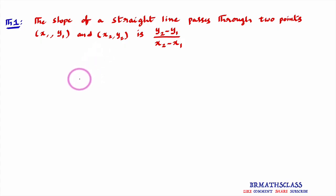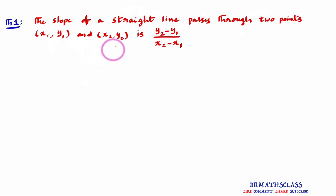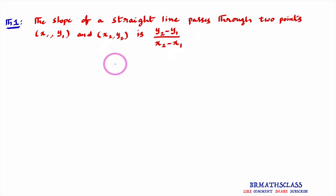In the last class we learned about slope of a straight line. When theta is the inclination of a straight line, then tan theta is called the slope of that straight line. In case a straight line passes through two points x1, y1 and x2, y2, then slope of that straight line is y2 minus y1 divided by x2 minus x1. In this class we are going to derive this result.